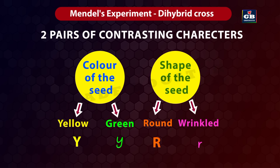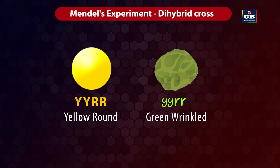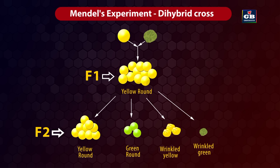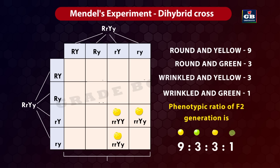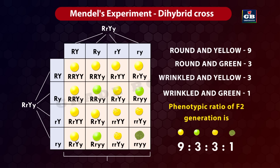In a dihybrid cross, two pairs of contrasting characters are considered. Mendel crossed a pure breed of round yellow seeds with a pure breed of green wrinkled seeds. In the F1 generation, all round yellow seed plants were obtained — all heterozygous round and yellow. When the F1 plants were self-pollinated, the F2 generation gave round yellow: 9, round green: 3, wrinkled yellow: 3, wrinkled green: 1 — a phenotypic ratio of 9:3:3:1.